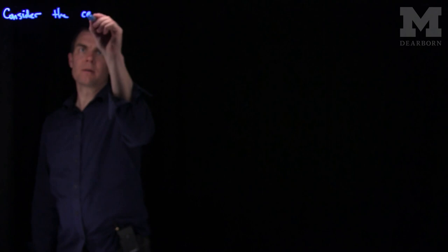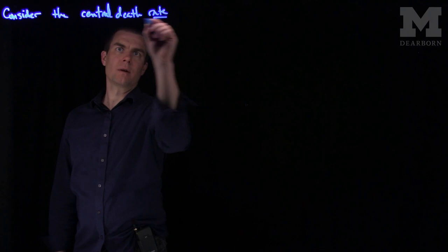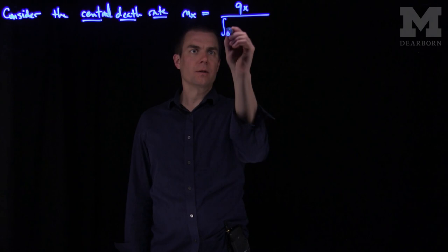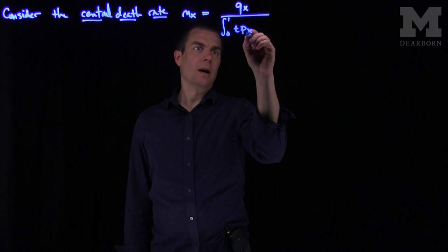We will consider the notion of a central death rate, defined as mx for age x as qx, the probability that a person at age x survives less than a year, divided by the integral, or the average value, over the entire year of the survival ship, tpx dt.